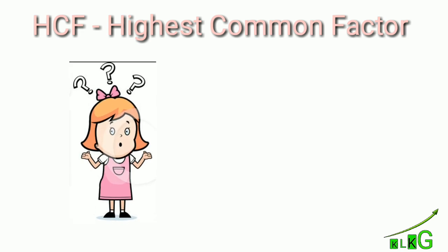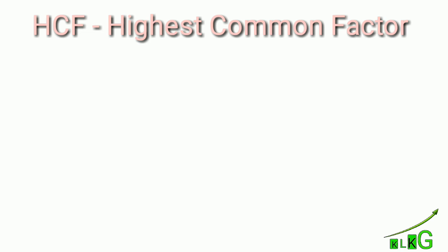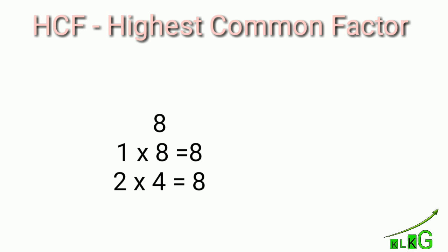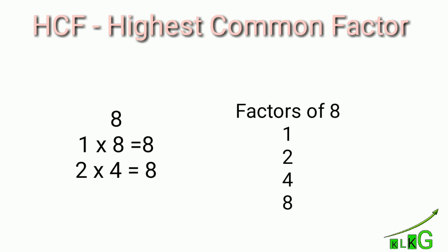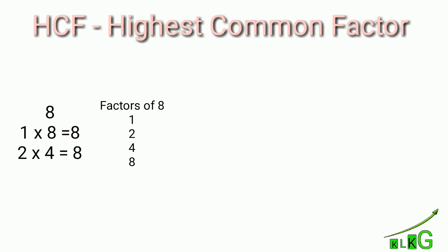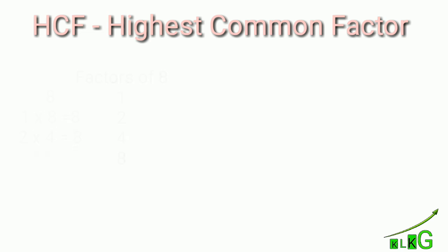What is a factor? A factor is a part of a thing, so here we are going to talk about numbers. For example, eight — eight comes in the table of one times eight, two times four is eight. So the numbers one, two, four, and eight are part of eight itself.